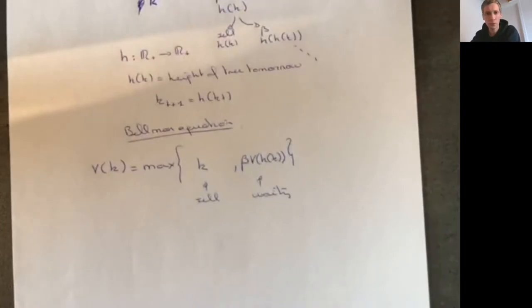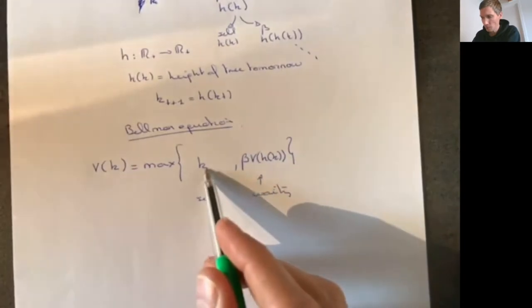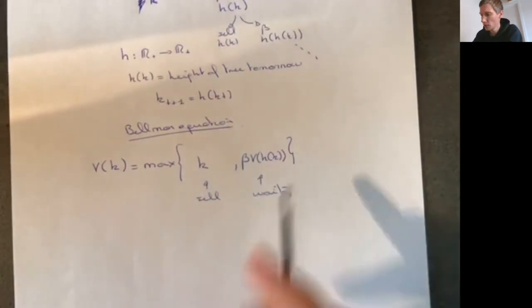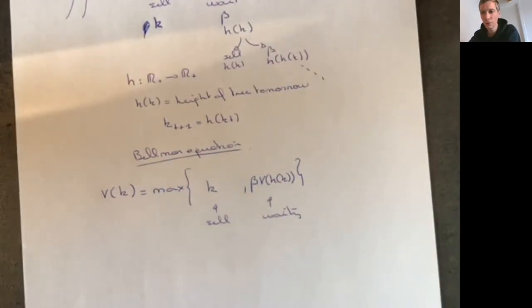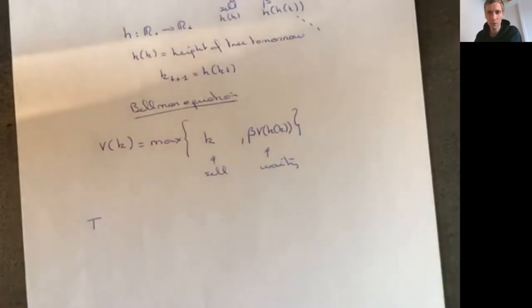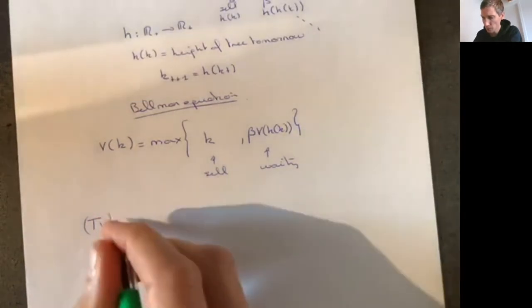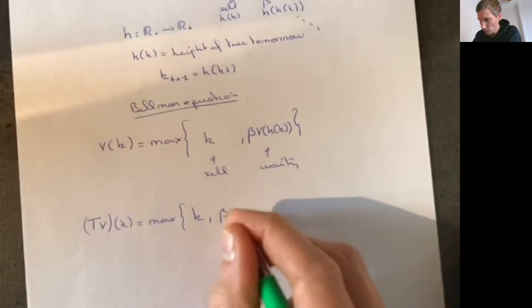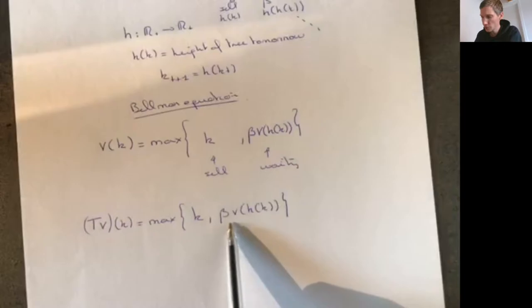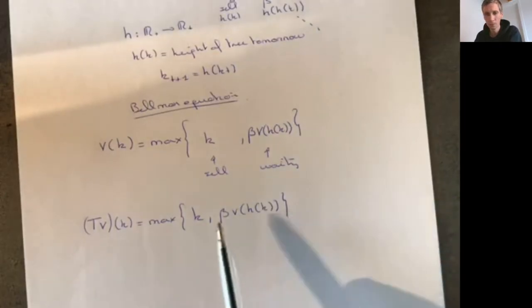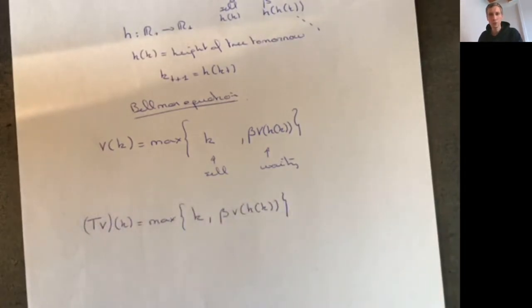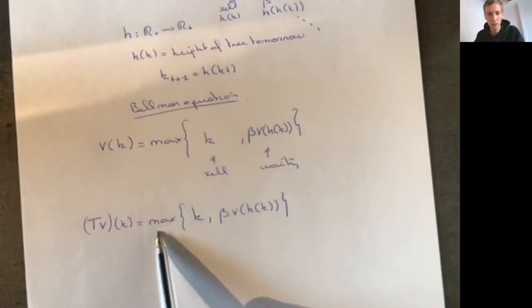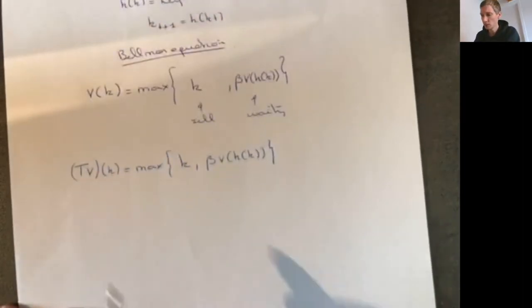Now we need to figure out how this function v looks. You can specify some function h and a parameter beta, and plot v using a computer via value function iteration. You map the Bellman operator T·V(k) = max(k, β·V(h(k))), starting with an arbitrary function v and iterating. You can show this is a contraction mapping by verifying Blackwell's conditions, so it converges to the fixed point.